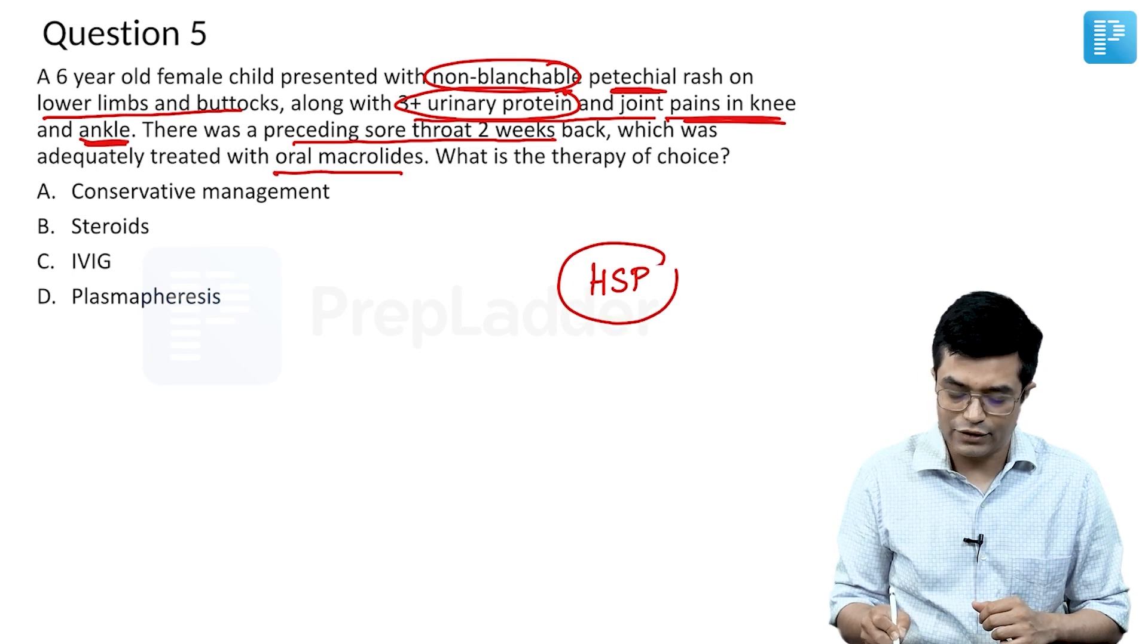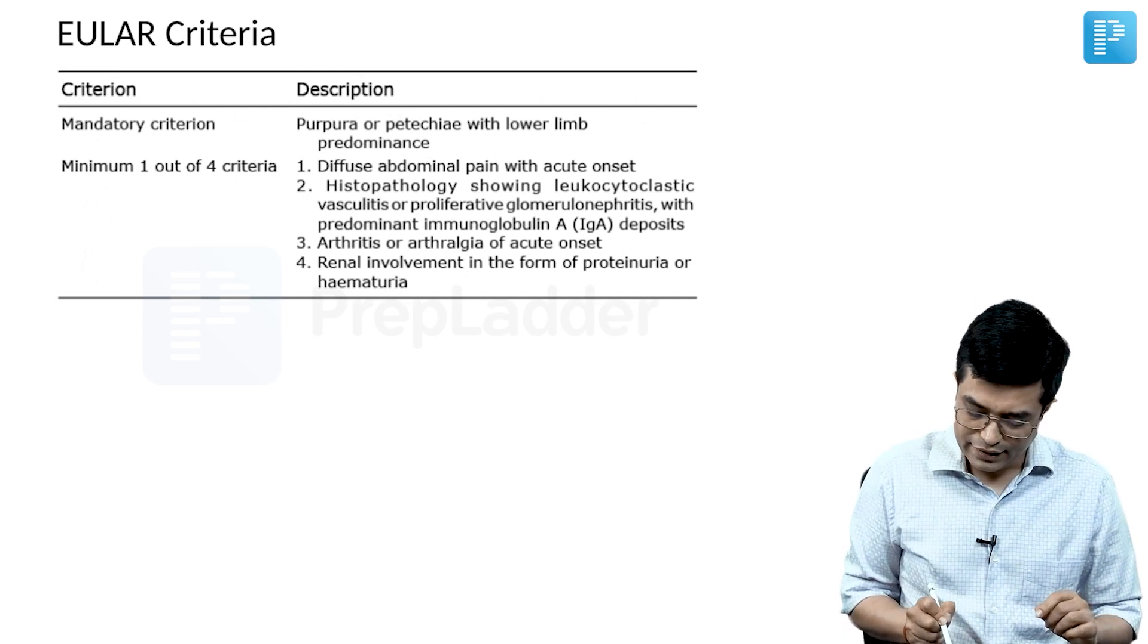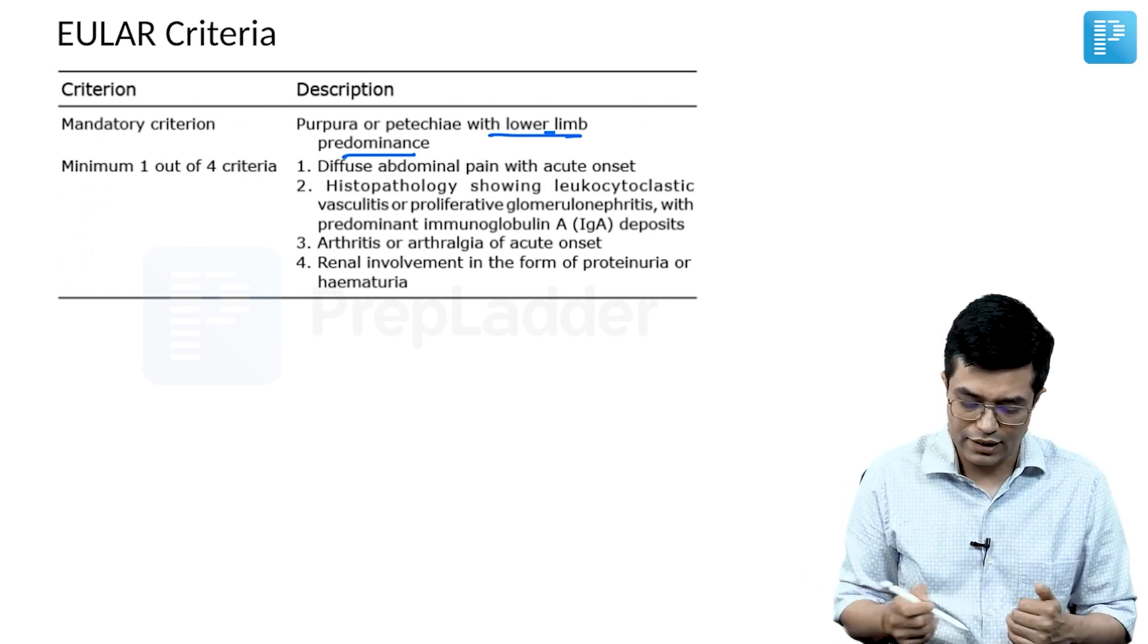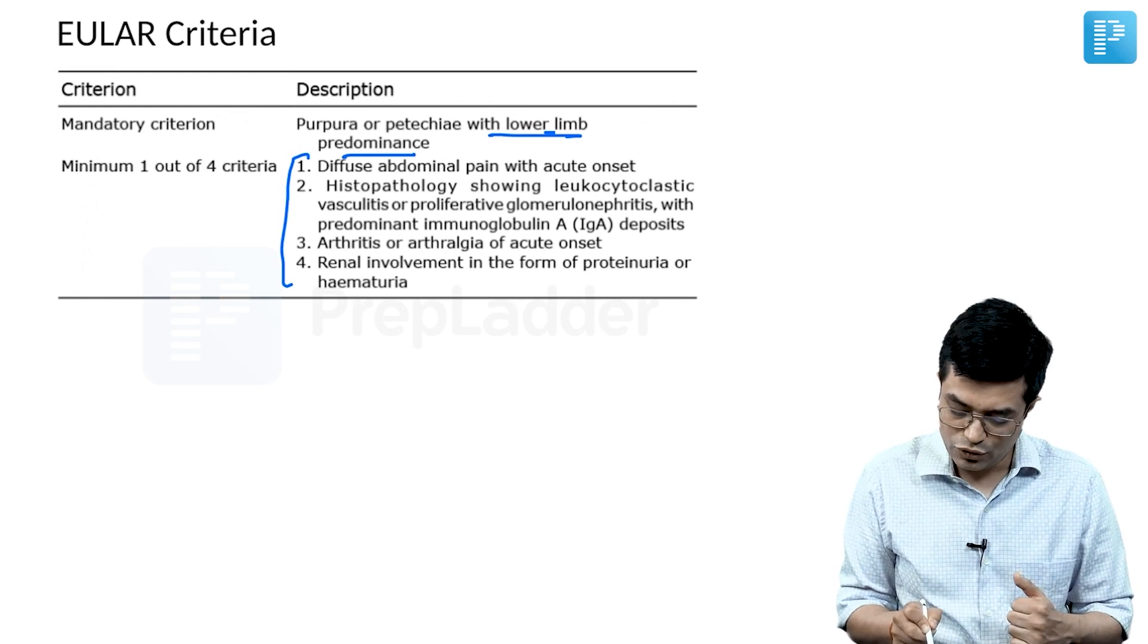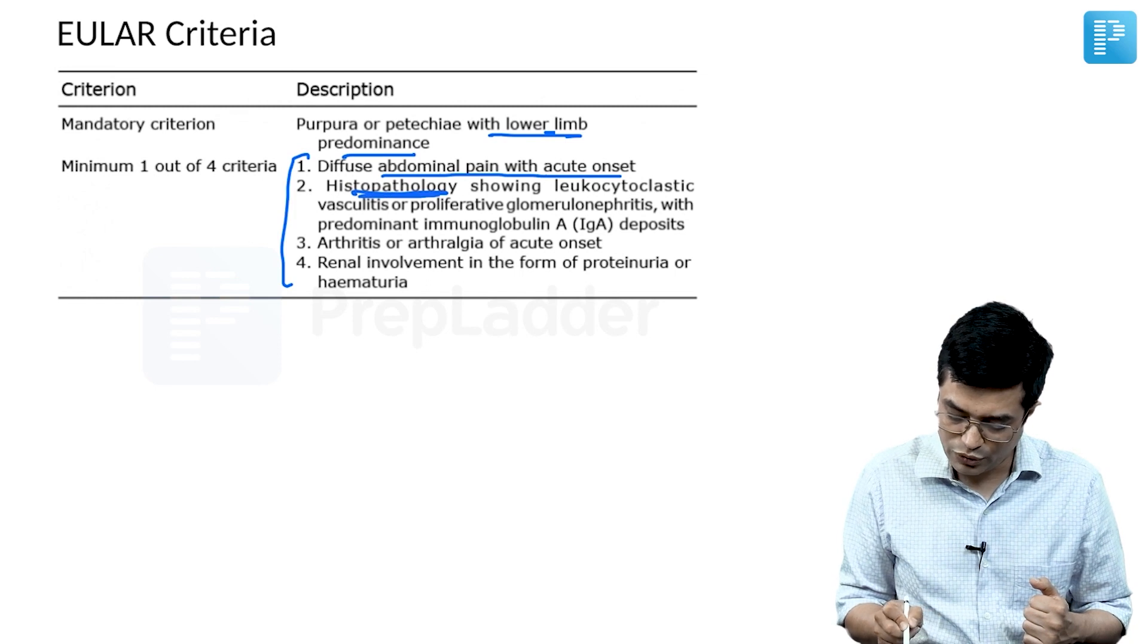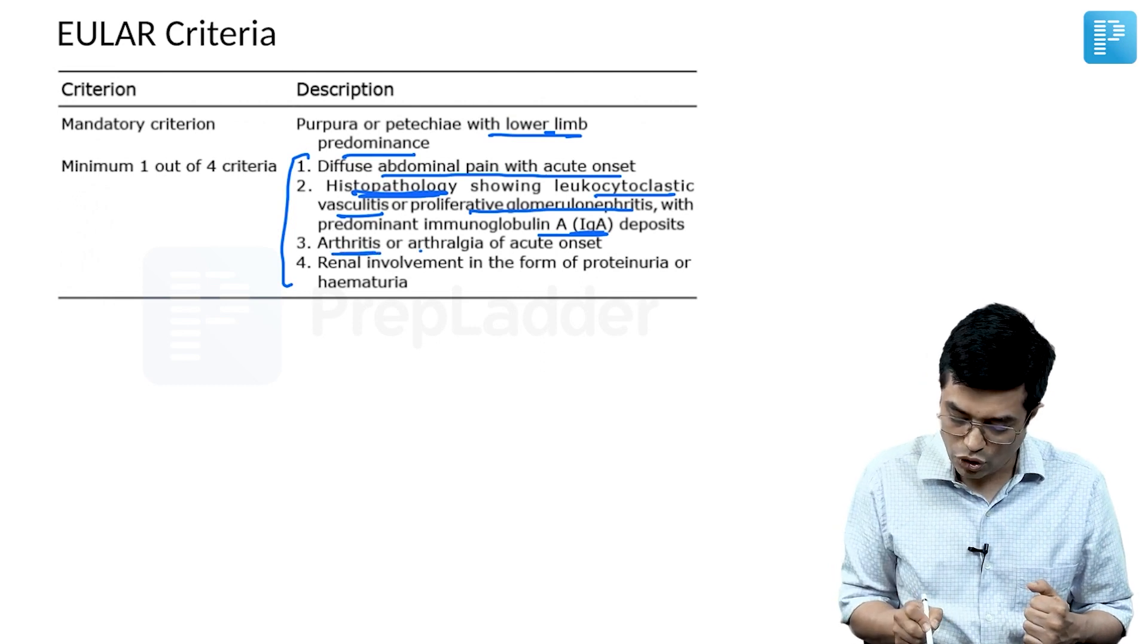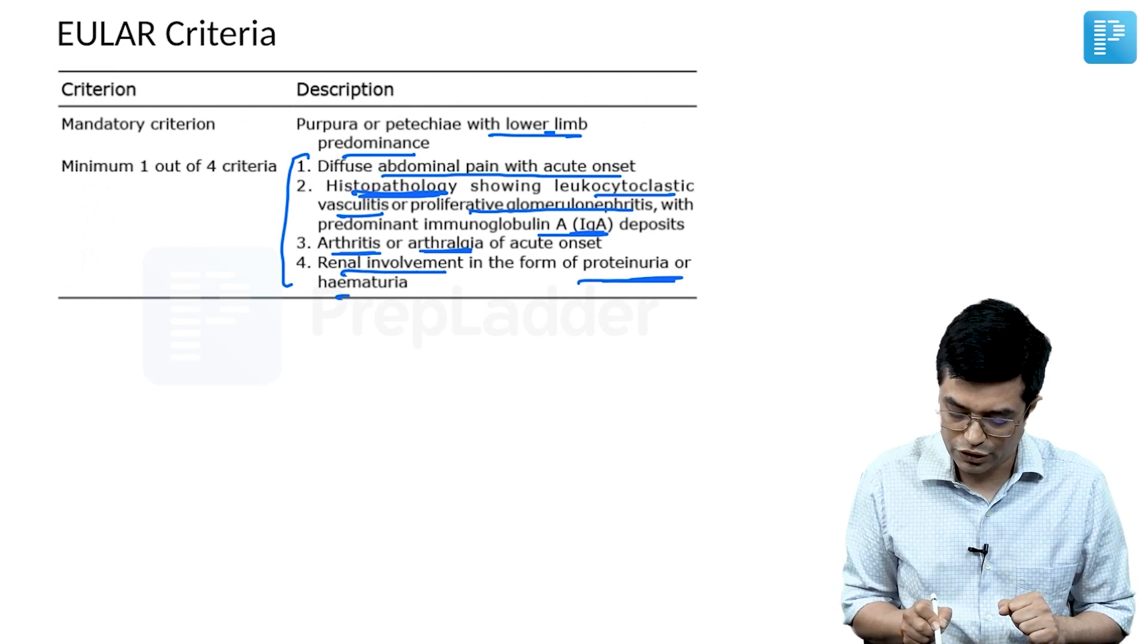Let us revise the diagnostic criteria for HSP. The EULAR criteria says the mandatory criterion is purpura or petechia with lower limb predominance, which includes the buttocks, and minimum one out of these four criteria should be present: diffuse abdominal pain with acute onset, histopathology showing leukocytoclastic vasculitis or proliferative GN with IgA deposits, arthritis or arthralgia of acute onset, or renal involvement in the form of proteinuria or hematuria.